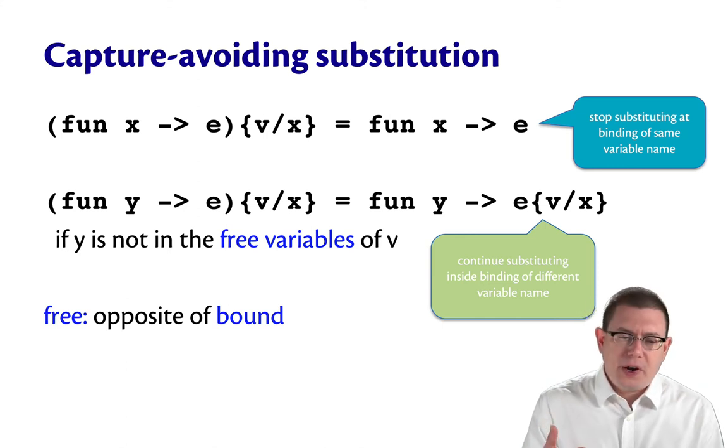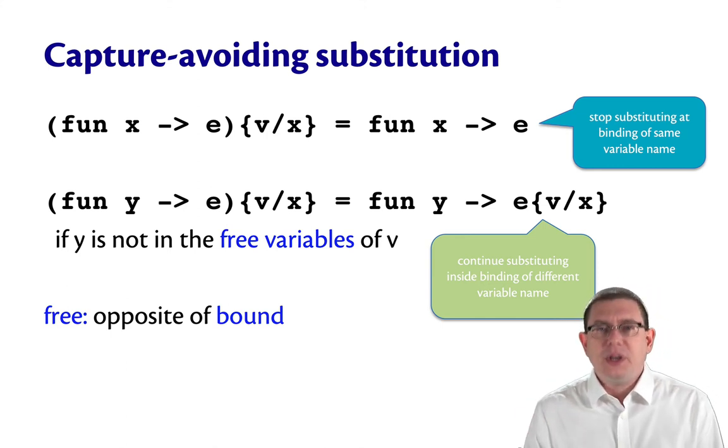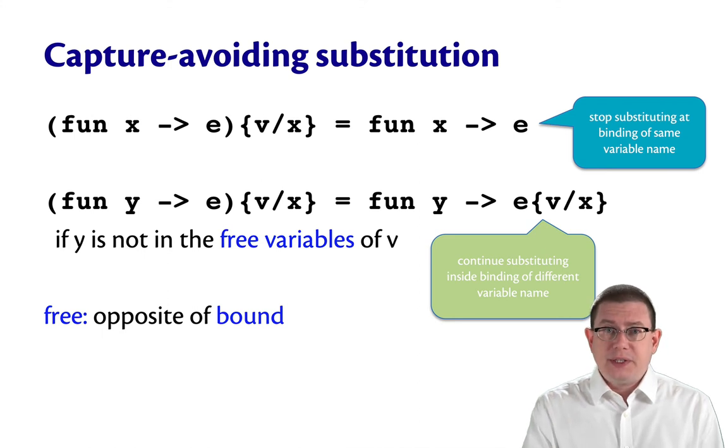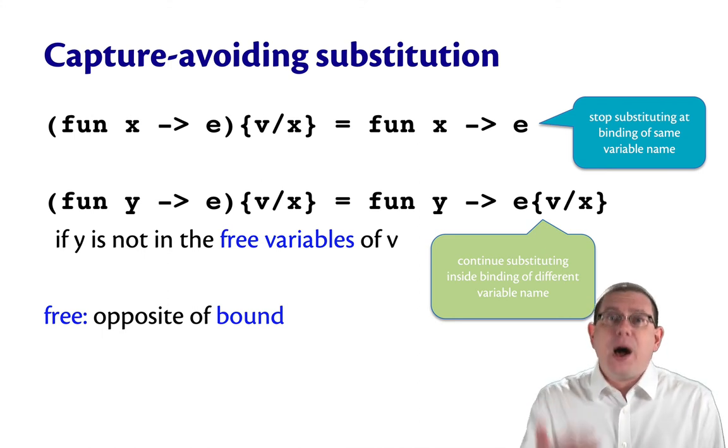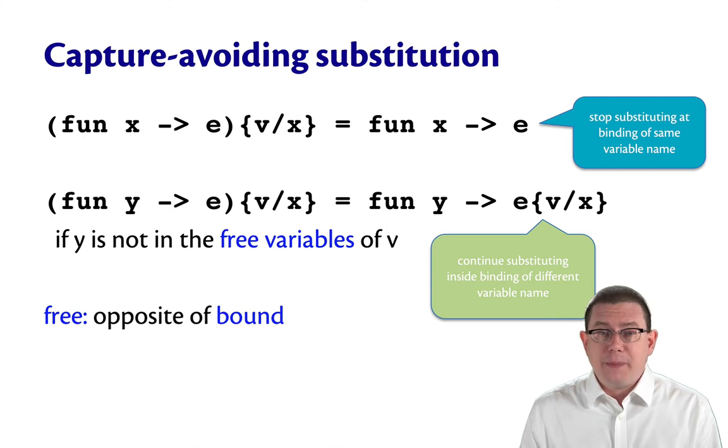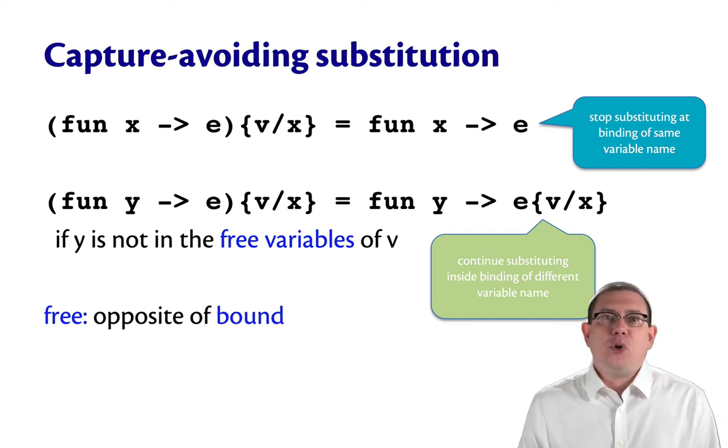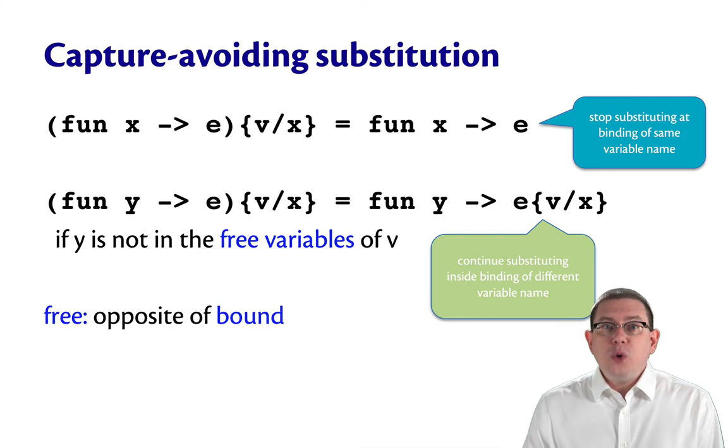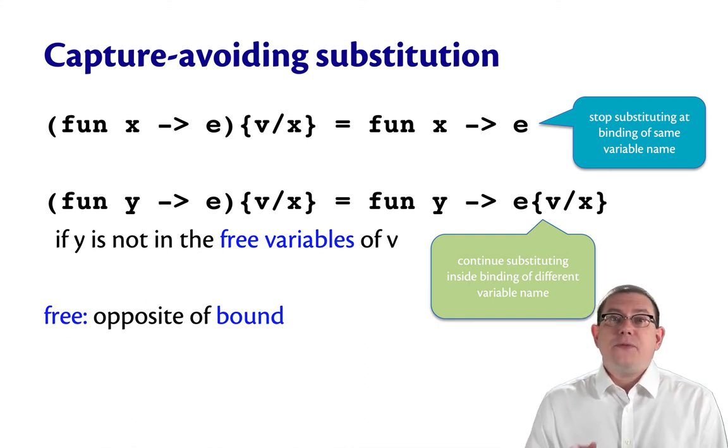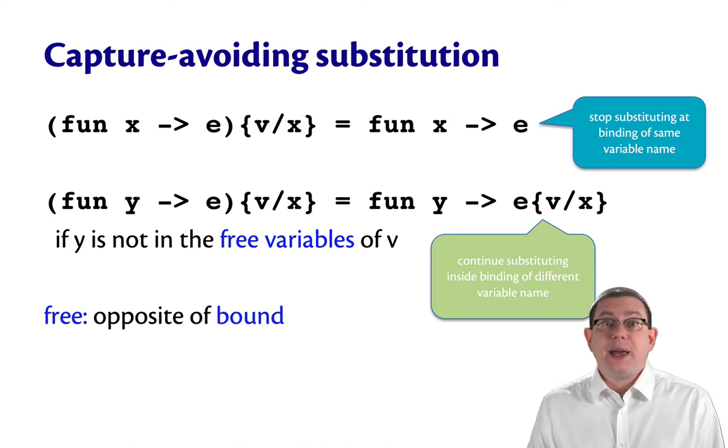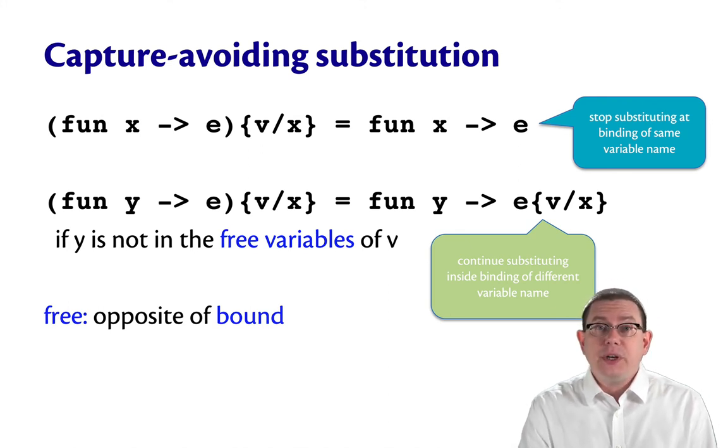Okay, so what's a free variable? Free is the opposite of bound. You know what a bound variable is? It's one that's showing up as being bound by a let expression, or bound by a pattern match, or bound by an anonymous function. So a variable is free if it's showing up and it's not been put into scope by any of this. So we don't recurse inside the body if v has a free occurrence of y in it, because that would cause that y to be captured, just as it was earlier with the variable z.